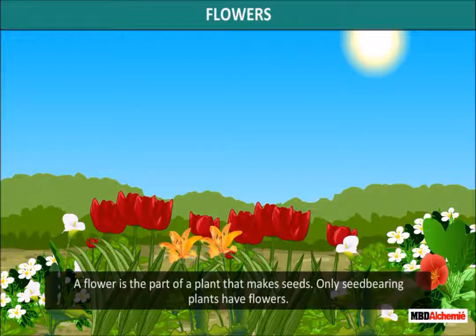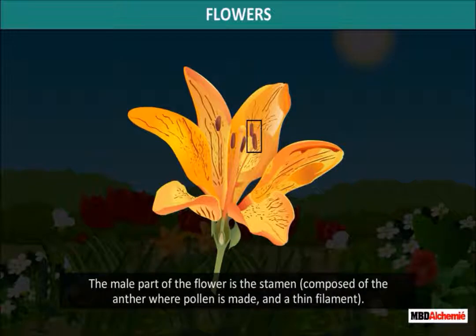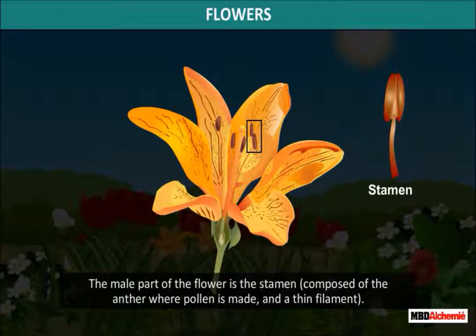A flower is the part of a plant that makes seeds. Only seed-bearing plants have flowers. The flower is the organ of reproduction in flowering plants. The male part of the flower is the stamen, composed of the anther, where pollen is made, and a thin filament.